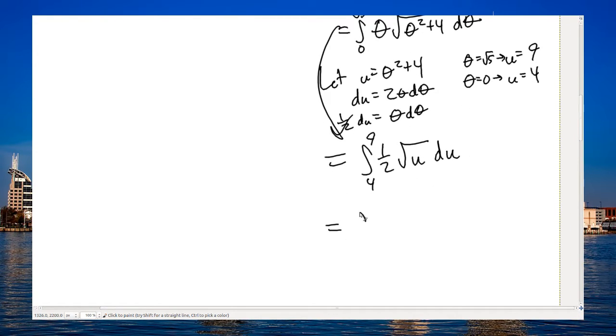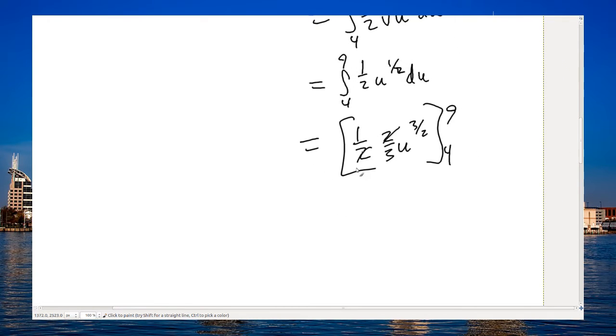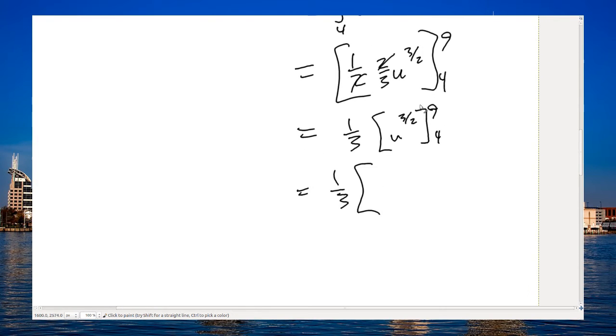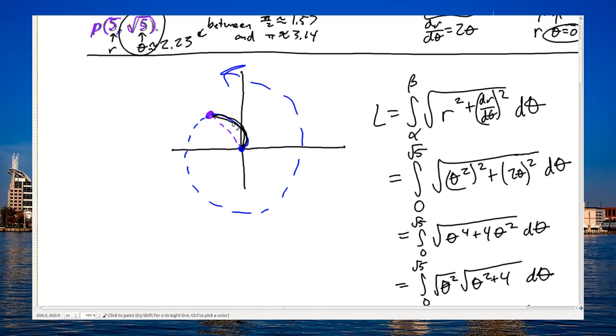Rewrite that as u to the 1 half. That will get me 1 half u to the 3 halves times 2 thirds from 4 to 9. Cancel out the half with the 2. So I've got 1 third u to the 3 halves from 4 to 9. That's 1 third times 9 to the 3 halves. That's 3 cubed is 27 minus 4 to the 3 halves. That's 2 to the 3, which is 8. 27 minus 8 is 19. 19 thirds. For my final answer, that's the length of this spiraled curve right here.